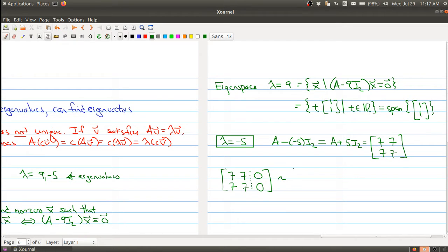This row reduces to 1, 1, 0, 0, 0, 0, 0. What we get is x2 is free, so we'll say that x2 is equal to t. Then we get the equation x1 plus x2 is equal to 0. So that tells me that x1 is equal to negative x2, which is equal to negative t.